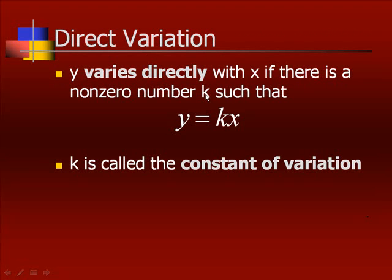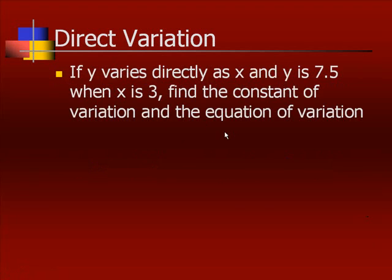Fourth type, the direct variation problems. We're going to do the y varies directly. Later, we will do the y varies inversely. But the y varies directly with x if there is a non-zero number k such that y equals k times x. That's what varies directly means. There is a number that is a multiple or that we can multiply by to get y. Now, this k is called the constant of variation. Once you find k for one problem, all problems similar to that will have the same k value.